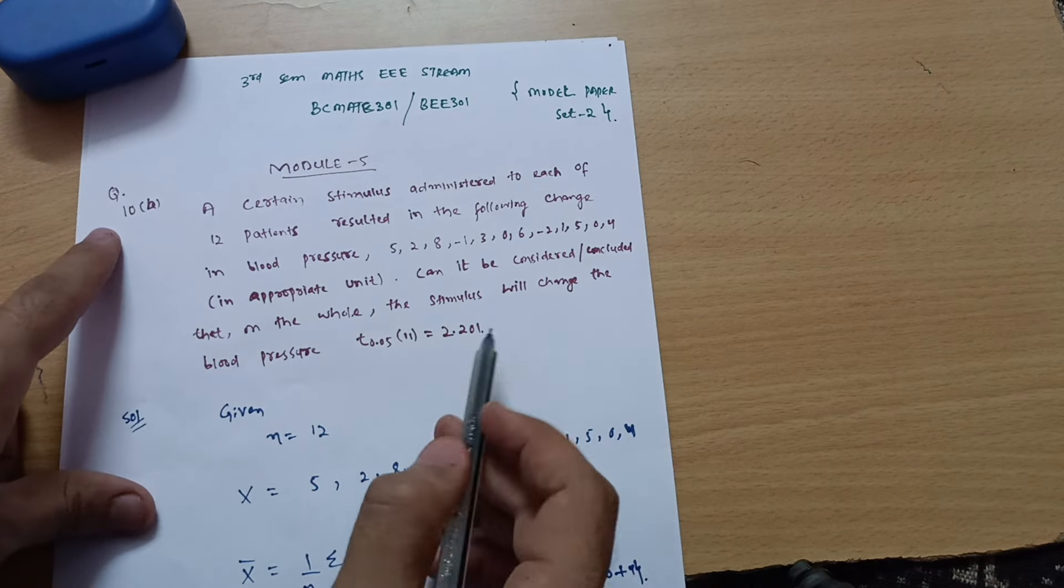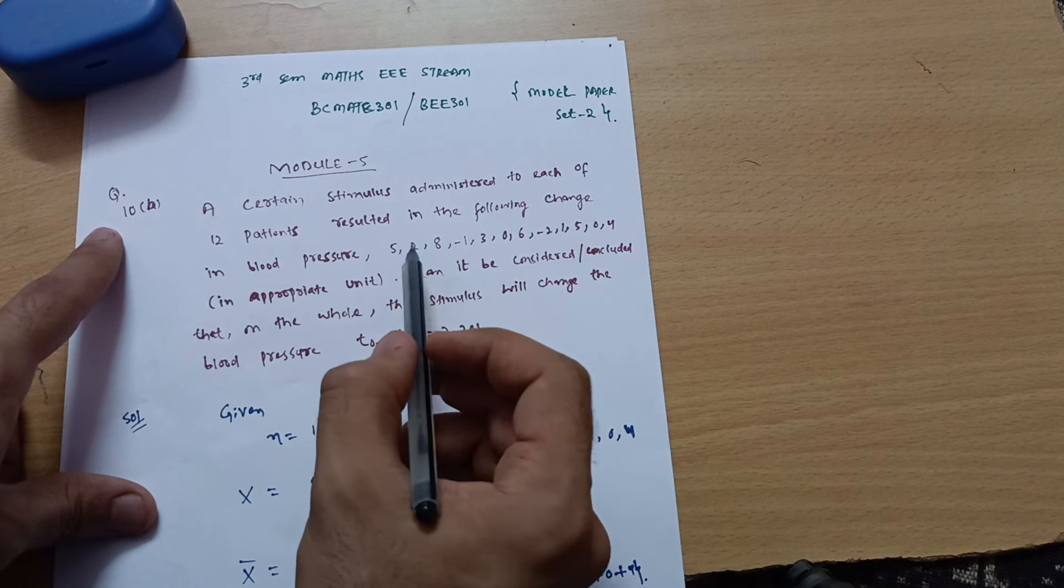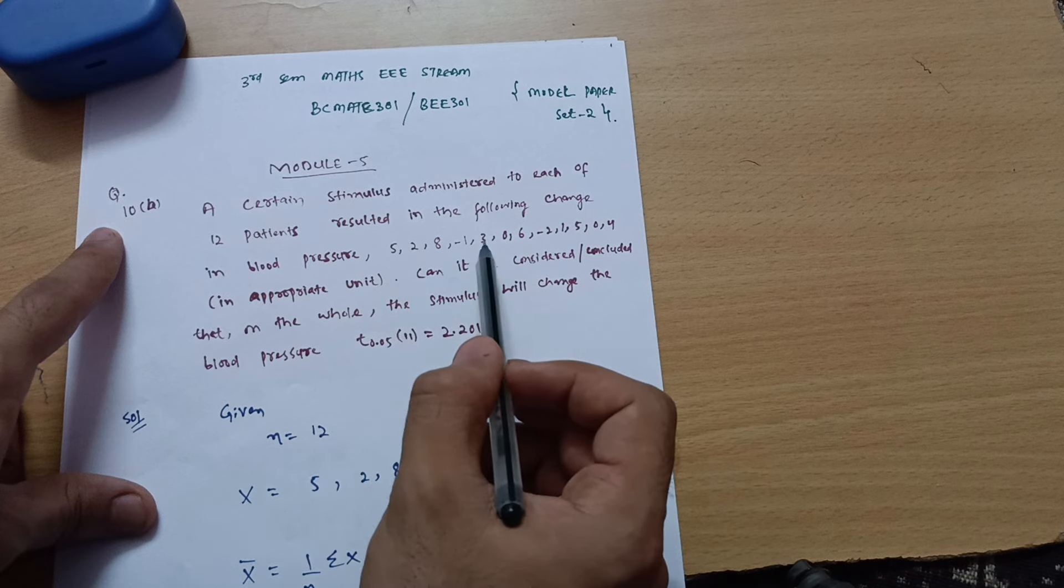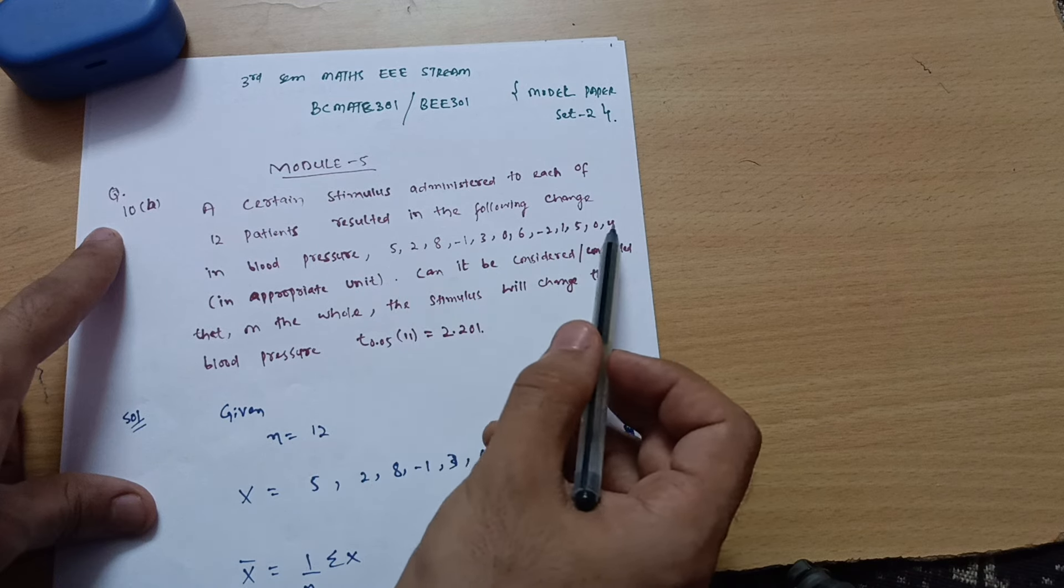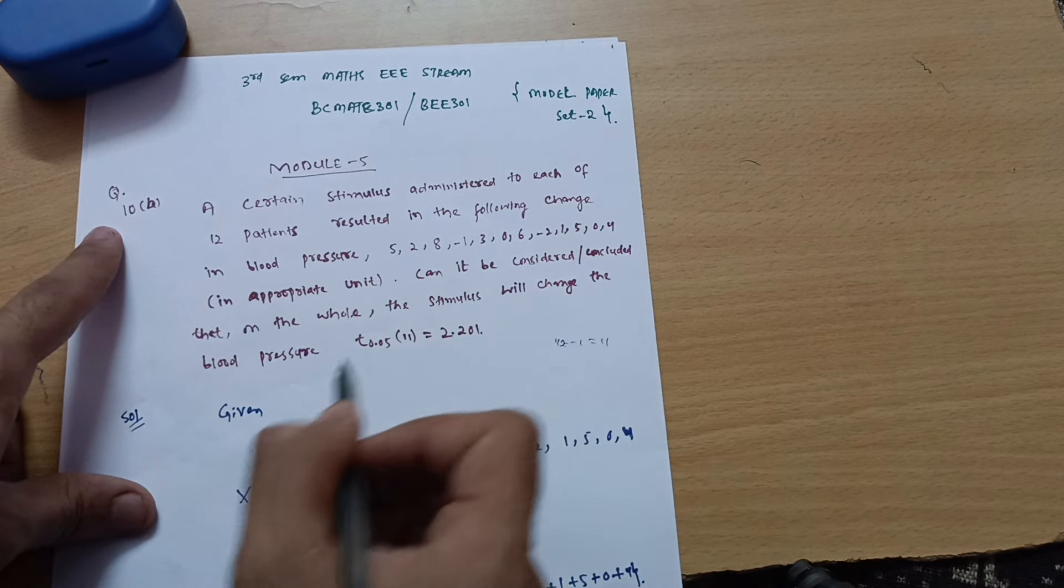So, degree of freedom is always equal to n minus 1. How many entities are over there? These are the blood pressure data: 1, 2, 3, 4, 5, 6, 7, 8, 9, 10, 11, 12. So, you can write down 12 minus 1 which is equal to 11. This is your degree of freedom, that is what 11 is over here.